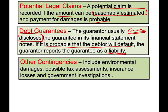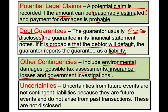Other contingencies include environmental damages, possible tax assessments, a pending IRS decision against you, insurance losses, and government investigations that may result in a loss. Uncertainties from future events are different — they are not contingent liabilities because contingent liabilities involve waiting for an outcome. You cannot book a liability for uncertainties, such as predicting you might get sued in the future. Uncertainties are not even disclosed.